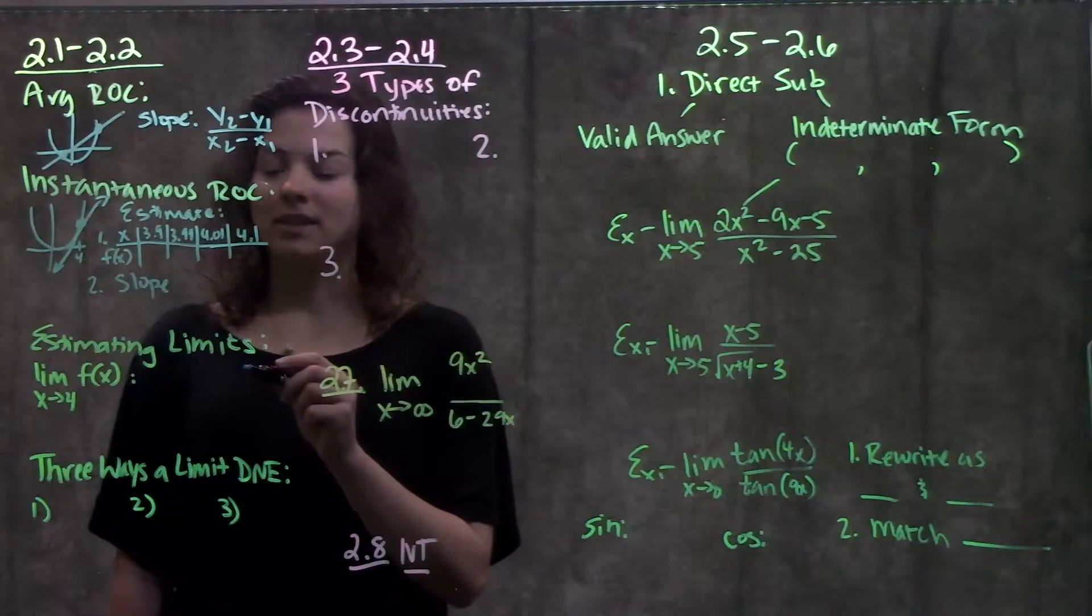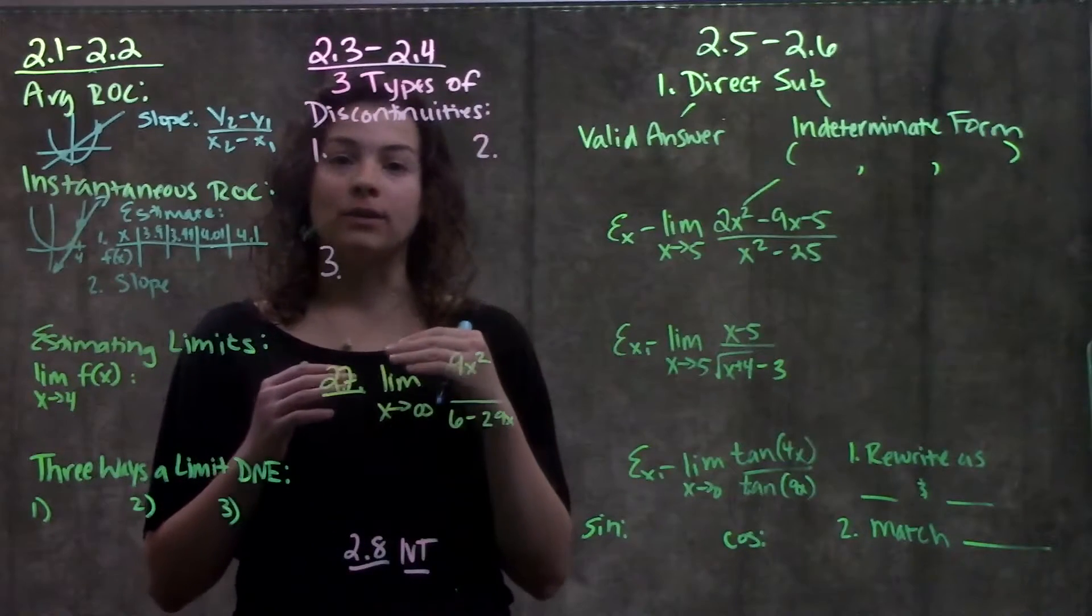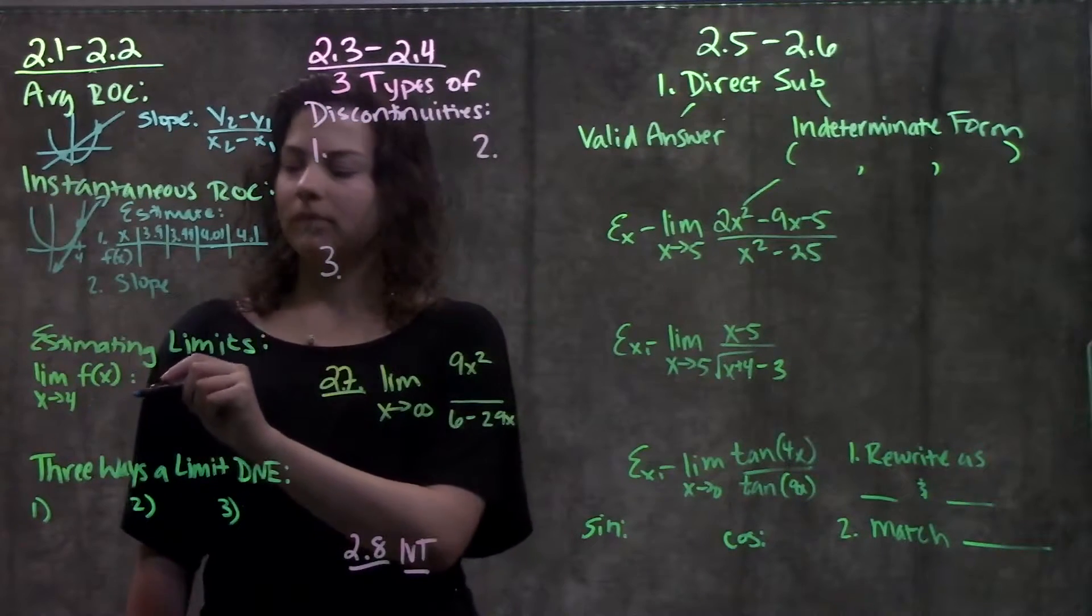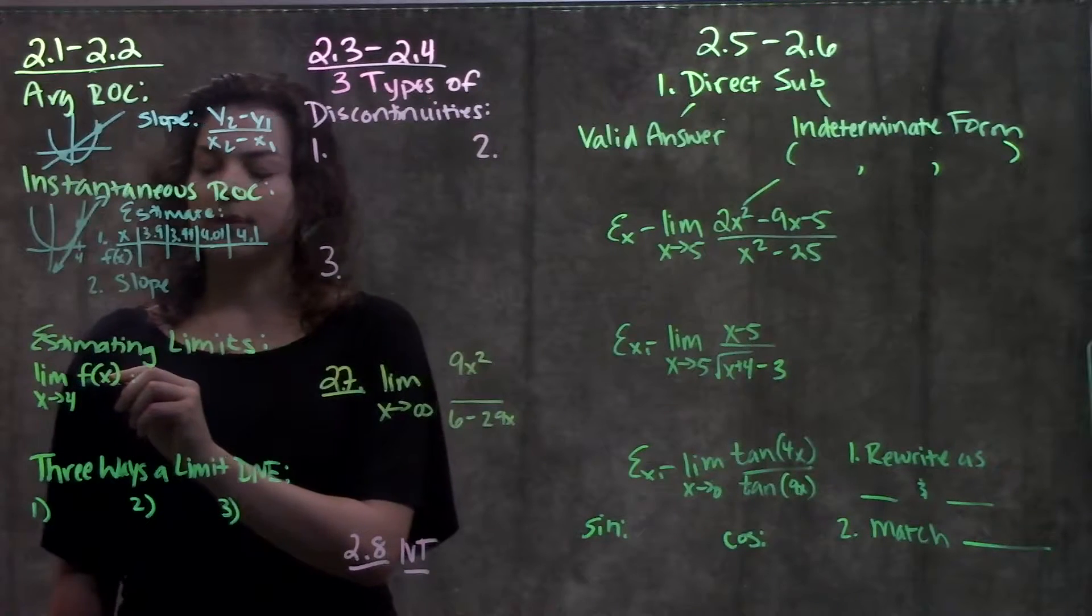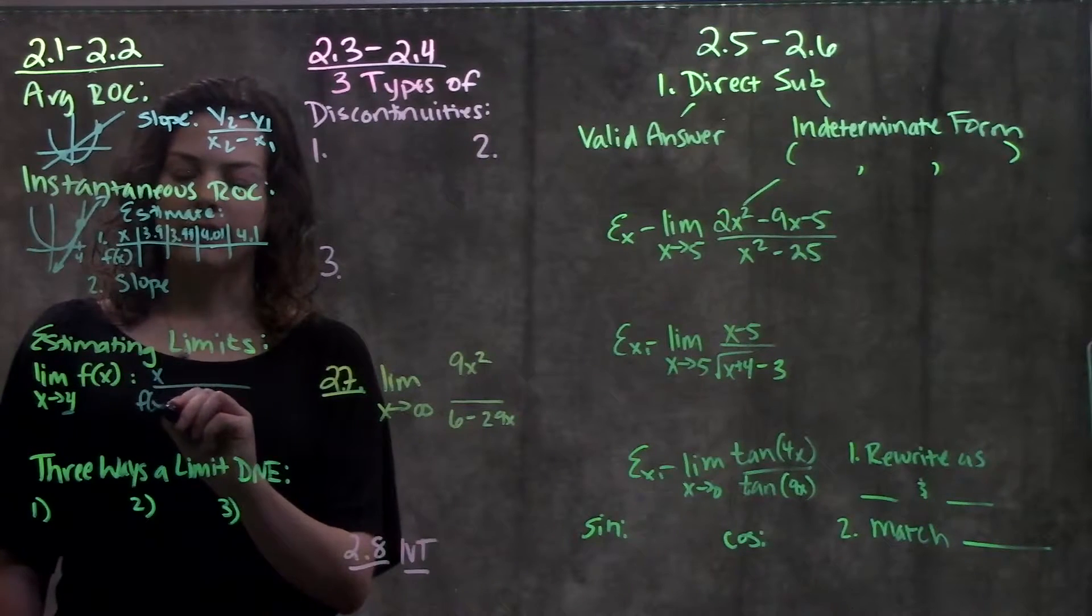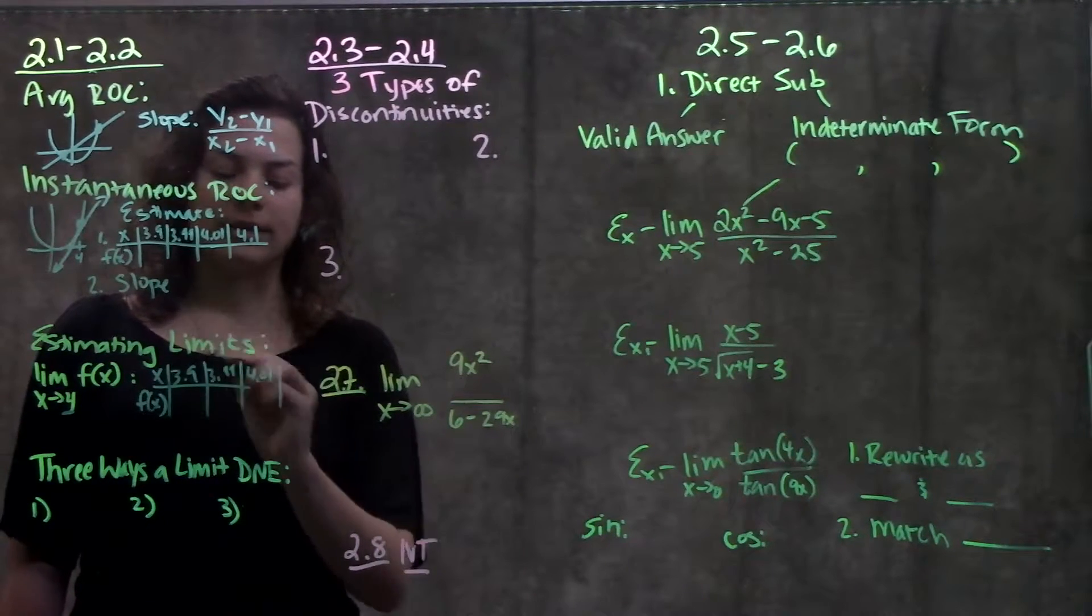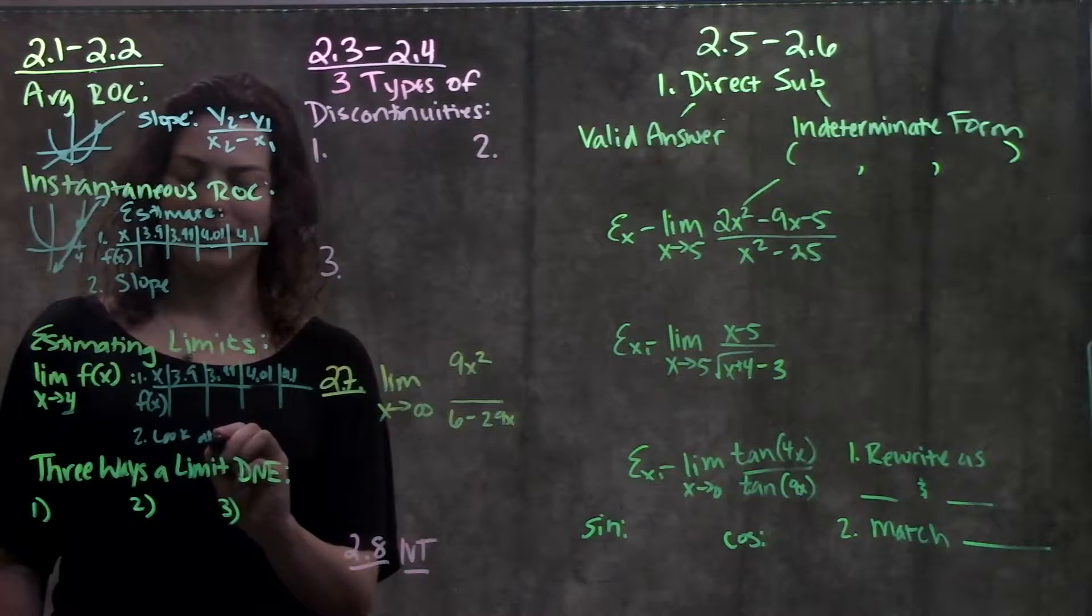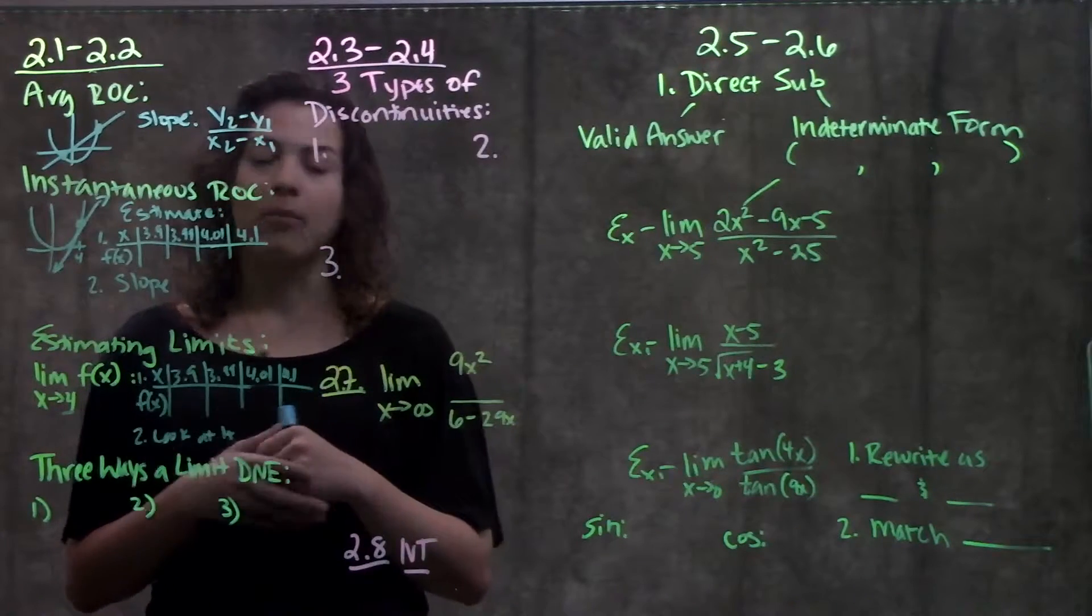Another topic we talked about in these sections was limits. When they're asking for the limit of a function, they're just asking what y value is a function approaching as we get closer and closer to this x value, to this point of interest. In this section, we learned how to estimate limits, and we did that really similarly to how we estimated slope. If they're asking for the limit as x approaches 4 of this function, they're interested in x equals 4, so we're going to plug in x values closer and closer to 4 from both sides again. In this section though, we don't have to do the second step. Step 1 was make a table, step 2 was look at table. We just see what y value our function is approaching as we get closer and closer to our point of interest from either side.